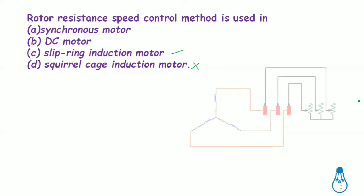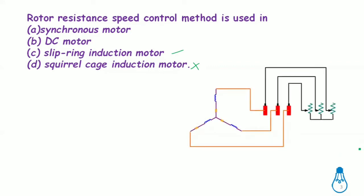In a slip ring induction motor, additional resistance can be included via brushes and slip rings. By varying this additional resistance, speed control is achieved. So the correct option is C — slip ring induction motor.